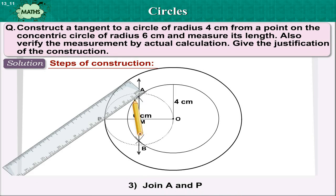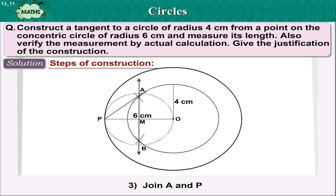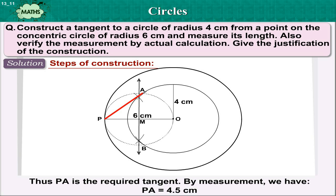Step 3: Join PA. Thus, PA is the required tangent. By measurement we have PA is equal to 4.5 cm.